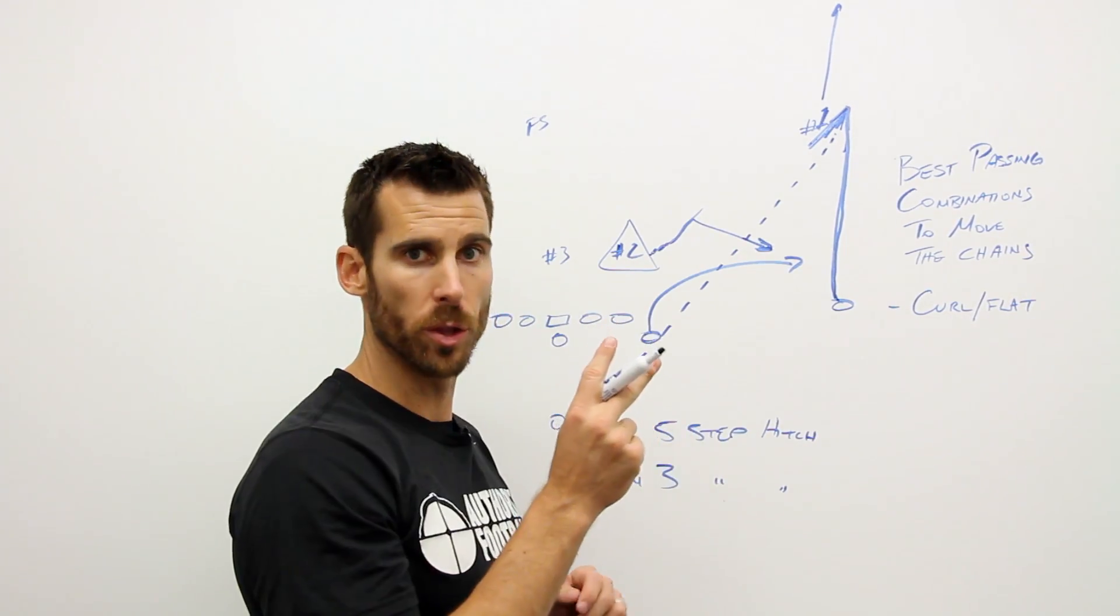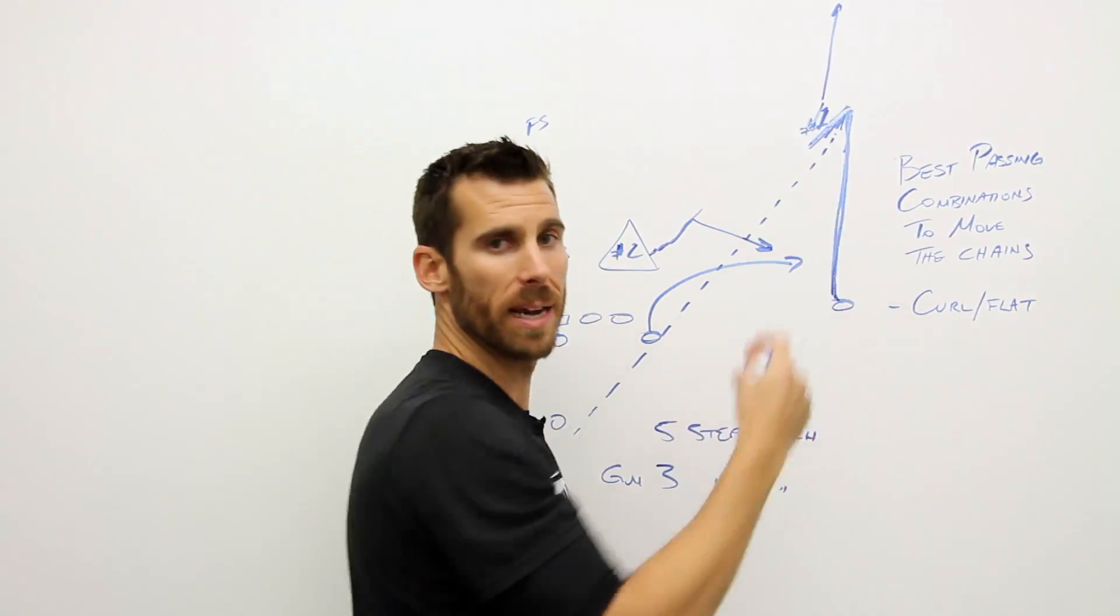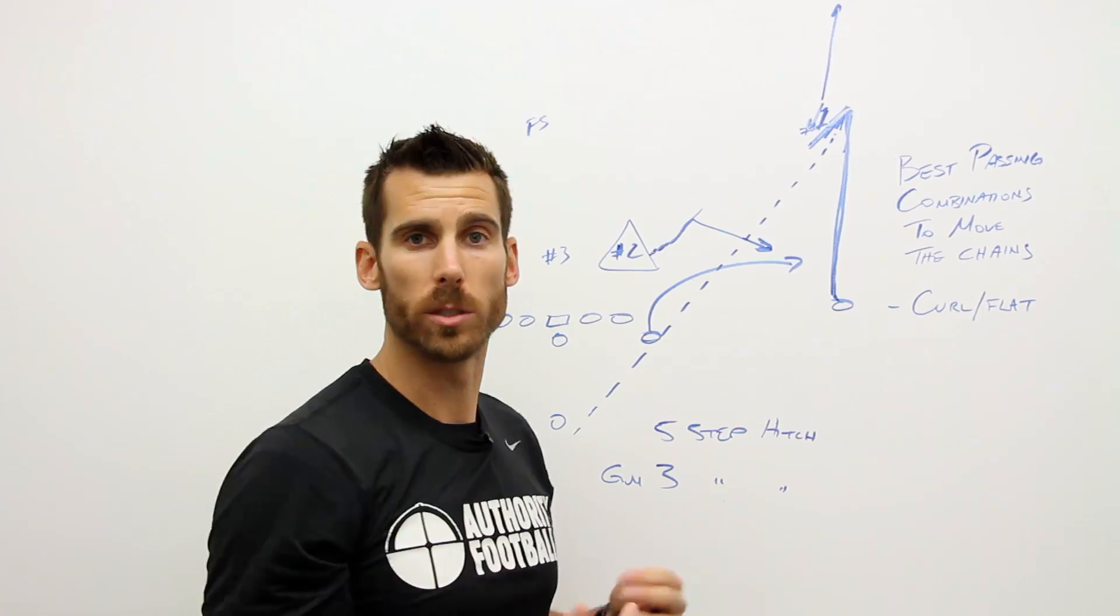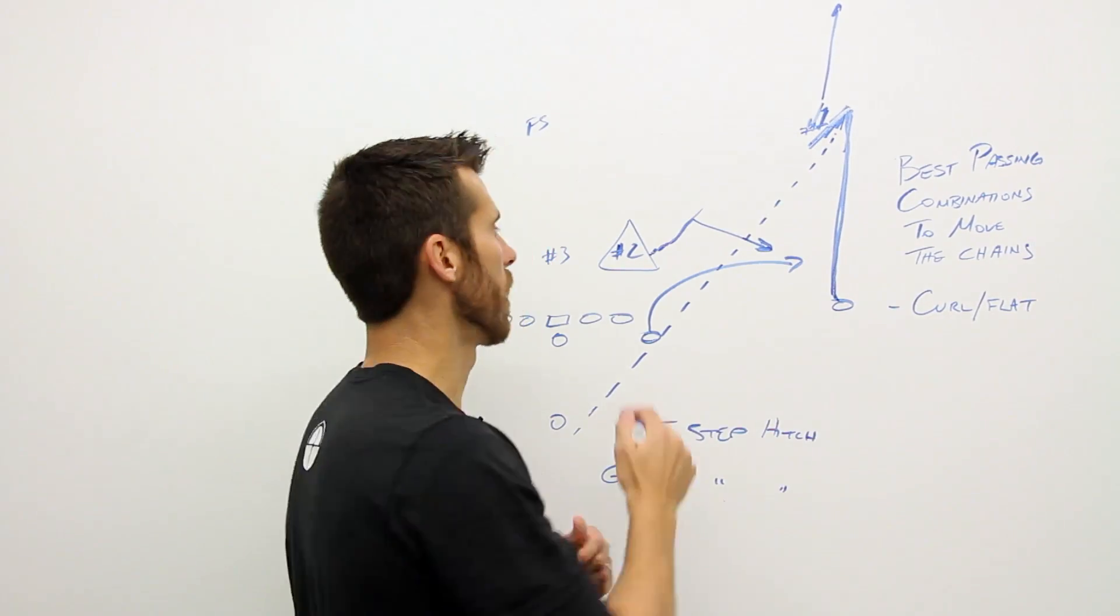Now, the biggest problem I see, there's two things. One is not getting a vertical stress, allowing that corner to come back down and make plays on our routes. So we want to make sure we push that vertical off, make it look like a good fade route that we're threatening.